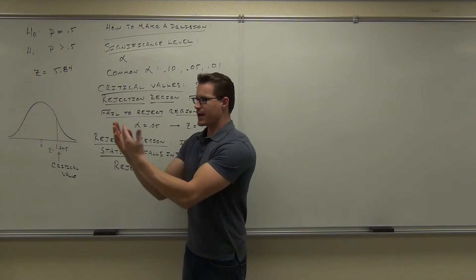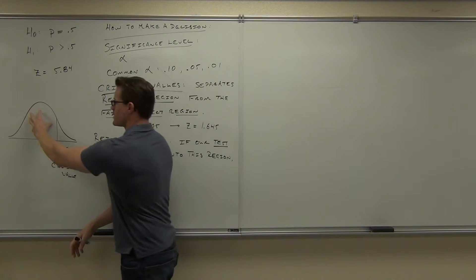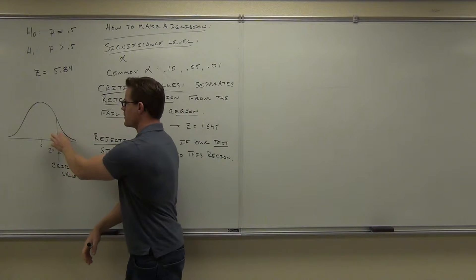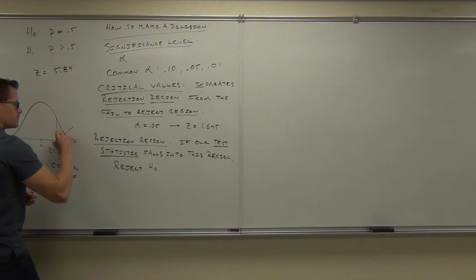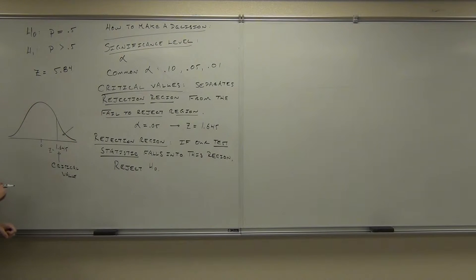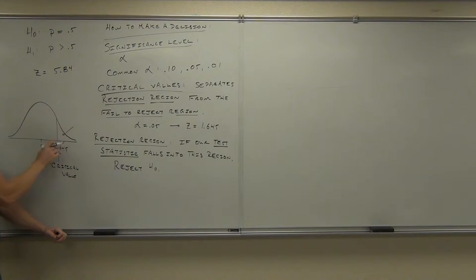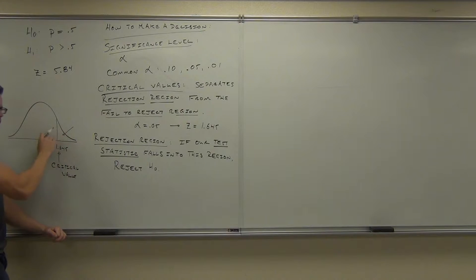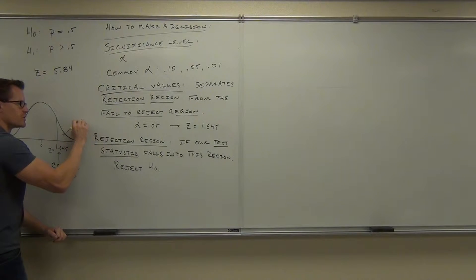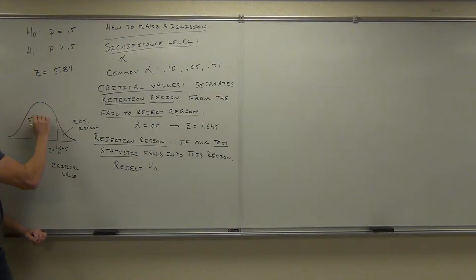Now, what that critical value does is it separates the rejection region from the fail-to-reject region. Here's the separation. The area in the tails is your rejection region. In here, this is the fail-to-reject region. The tail — that's your rejection region. This tail right here represents 0.05 as a proportion of your area. That's how we found our 1.645. We would look up the 0.05, it gives us a critical value of 1.645. This is the rejection region. This would be the fail-to-reject region.